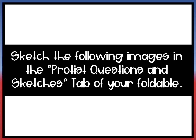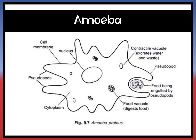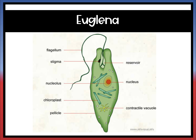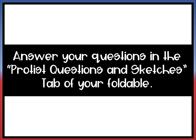You will now sketch the following images in the protist questions and sketches tab of your foldable — tab number five. You can do this by pausing the video or by pulling up the PowerPoint after the video is done. Here's an amoeba — you will sketch this. This is a euglena — you will sketch this. And this is a paramecium — you will sketch this in that tab. Once done, go ahead and answer your questions on the protist questions and sketches tab of your foldable.